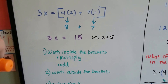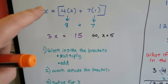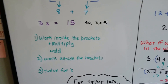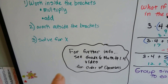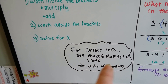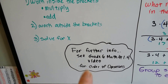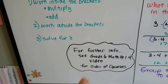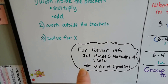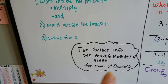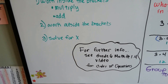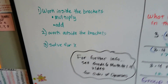You multiply, then you add. You work outside the brackets and solve for x. If you're still confused about the order of operations, go to Grade 6 math number 1.4 — the video will give you a refresher and tell you all about the order of operations and why it's important. There are very good examples there, so you might want to watch that one if you're still confused.